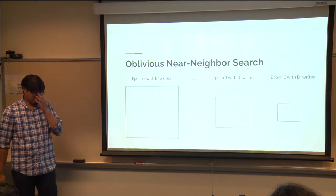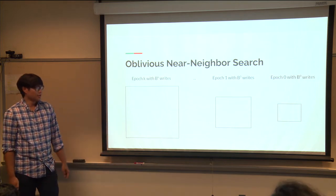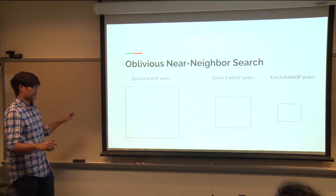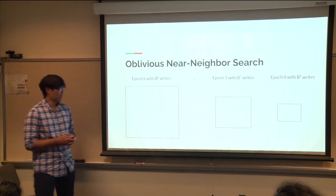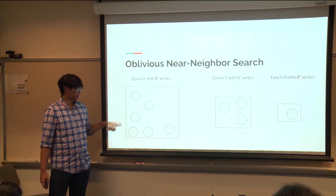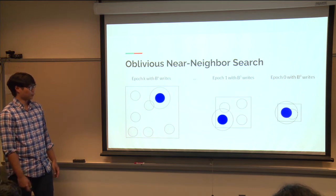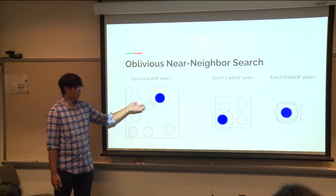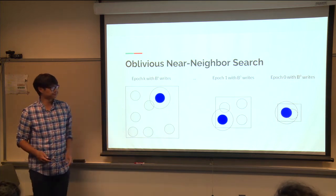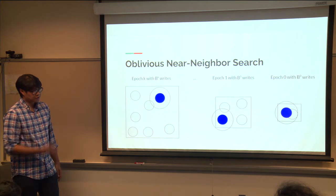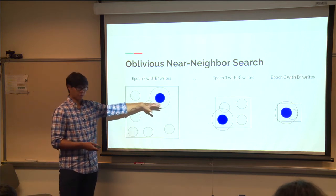The solution is to use obliviousness: stitch together different distributions. We partition the space — using a polylog Boolean hypercube — by epoch, so updates for each epoch fall in their own partition. A random query within a partition will hit a point from exactly that epoch, solving the problem of small epochs being missed.